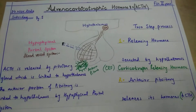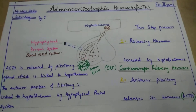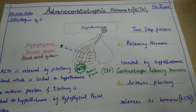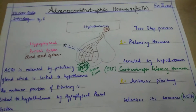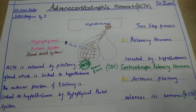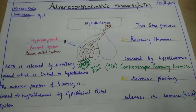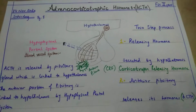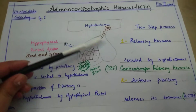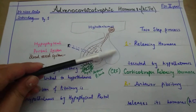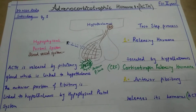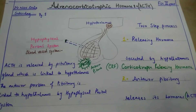As studied in previous lectures, the anterior pituitary's origin is from Rathke's pouch evagination, so it is vascular in origin, while the posterior pituitary is neuronal in origin. So the corticotrophin releasing hormone stimulates the anterior pituitary to release the adrenocorticotrophic hormone.